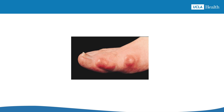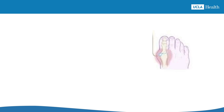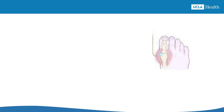Developing gout doesn't happen overnight. Living with a high uric acid level and forming crystals can take years or even decades before it becomes a noticeable problem. Fortunately, gout can be cured using medication to lower the uric acid level and dissolve the crystals, but this can take months. For more information, check out the curing gout chapter. Now let's answer the question: What causes a gout attack? A gout attack happens when your immune system reacts to uric acid crystals and begins to attack them.